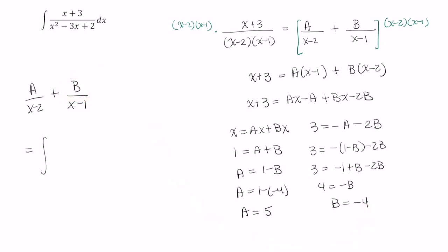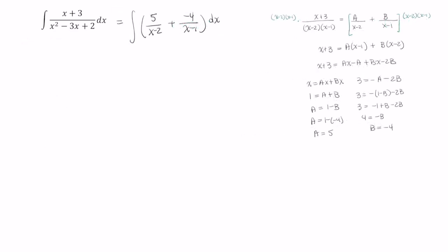we're rewriting this as the integral of 5 over x minus 2 plus negative 4 over x minus 1 dx. And I'm going to rearrange my paper for space, so hopefully you've left yourself some room next to your integral.